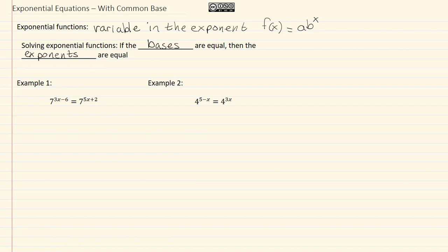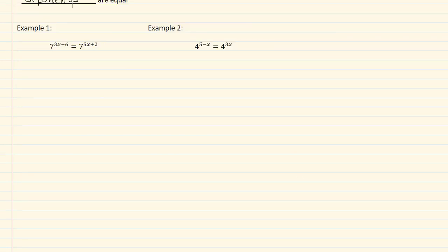So let's take a look at our examples and see how this works. In example one, we have seven raised to the three x minus six power equal to seven raised to the five x plus two. So since our bases are equal or the same, we're going to drop them and solve for our variable in our exponent.